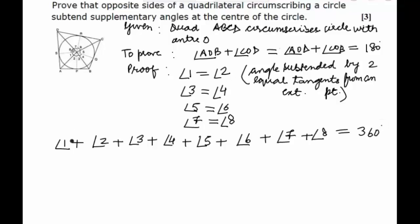Now substituting that angle 1 equals angle 2, we will get twice angle 2. For substituting angles 4 and 3, we will get twice angle 3, twice angle 6, and twice angle 7. This is equal to 360 degrees.